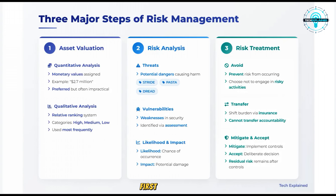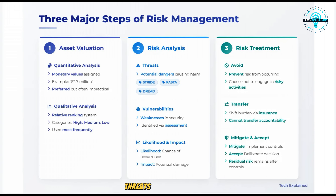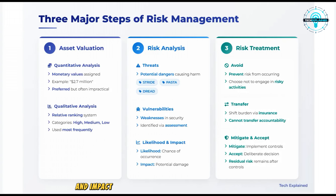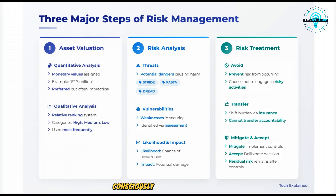Risk management breaks down into three major steps. First, asset valuation: you need to know what you're protecting, assigning value to assets either quantitatively in monetary terms or qualitatively using rankings like high, medium, or low. Next, risk analysis: identify threats and vulnerabilities — threats are potential dangers, vulnerabilities are weaknesses that could be exploited — and assess likelihood and impact. Finally, risk treatment: once you've identified and analyzed risks, you decide how to treat them. The options are avoid (eliminate the risk by not doing the activity), transfer (shift the risk to someone else, like buying insurance), mitigate (implement controls to reduce the risk), or accept (consciously decide to accept the risk).